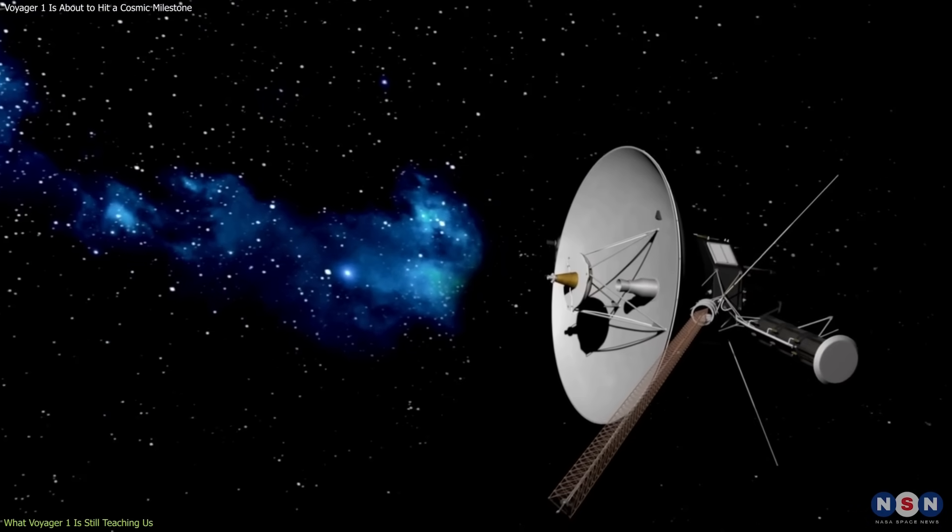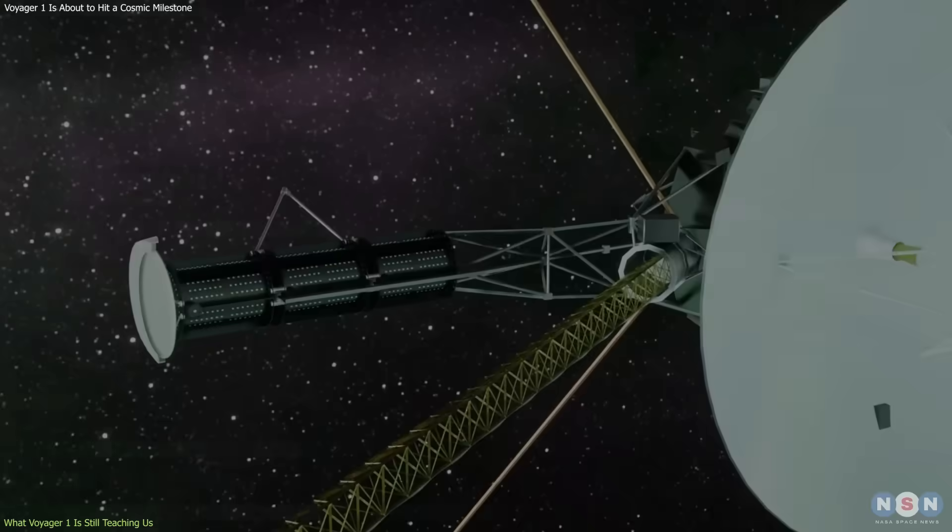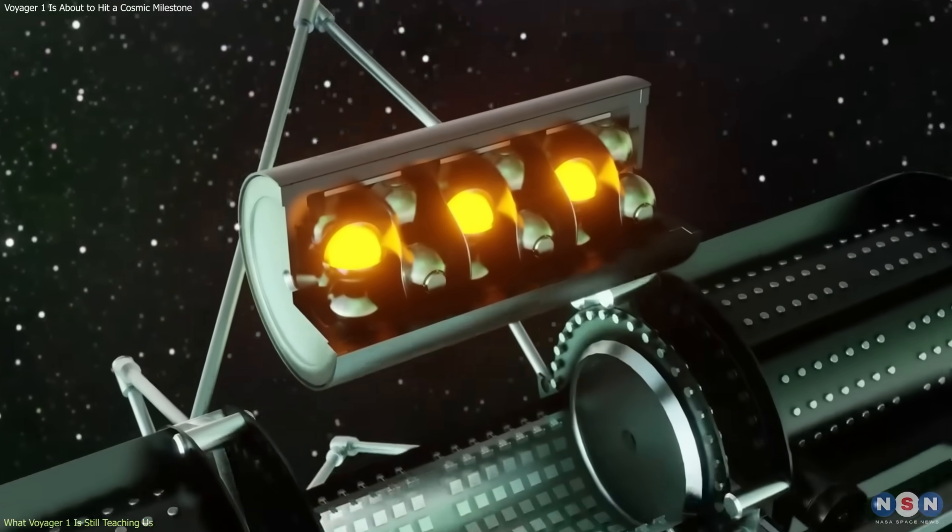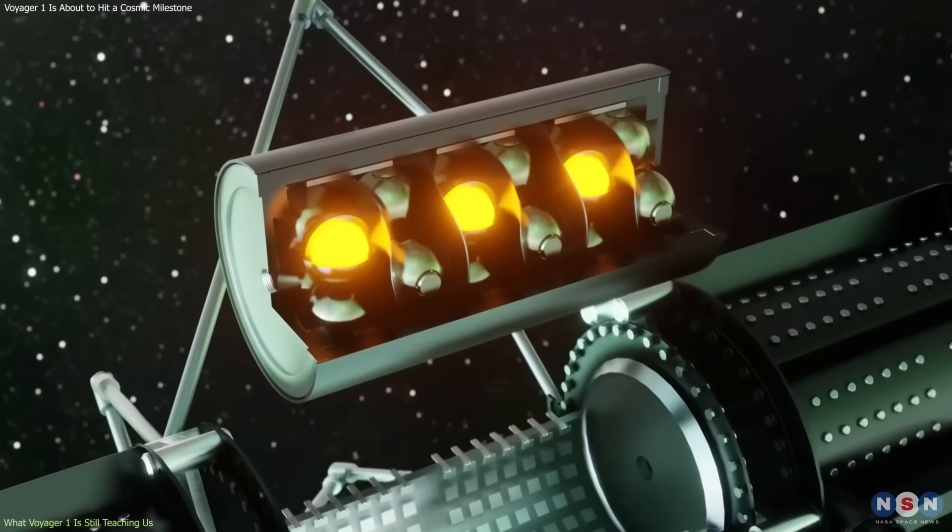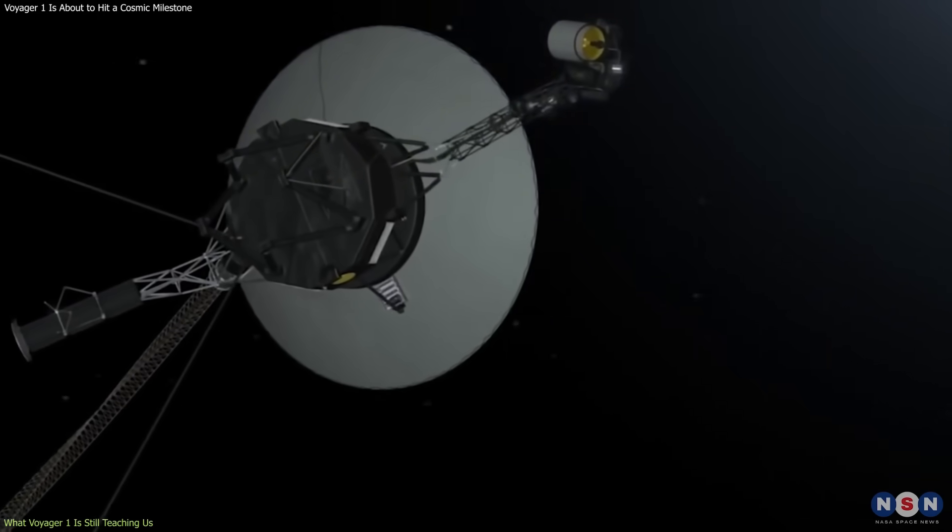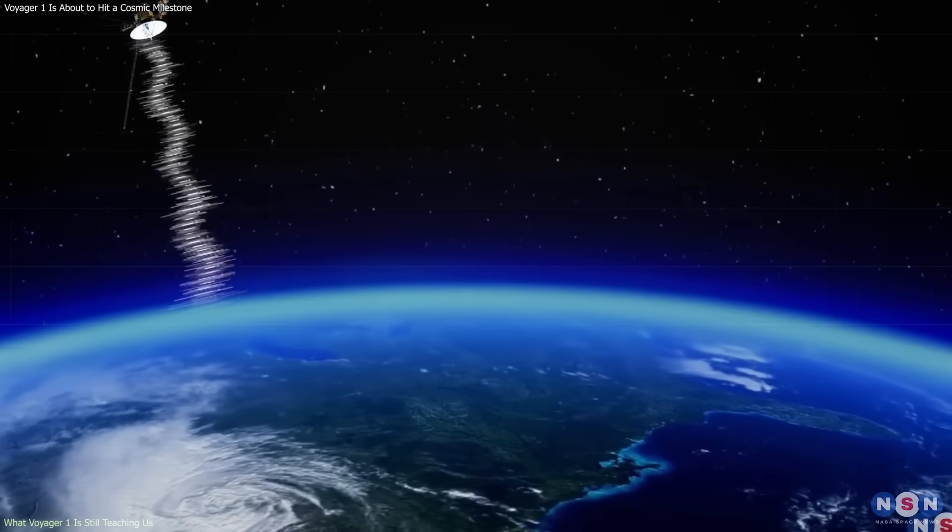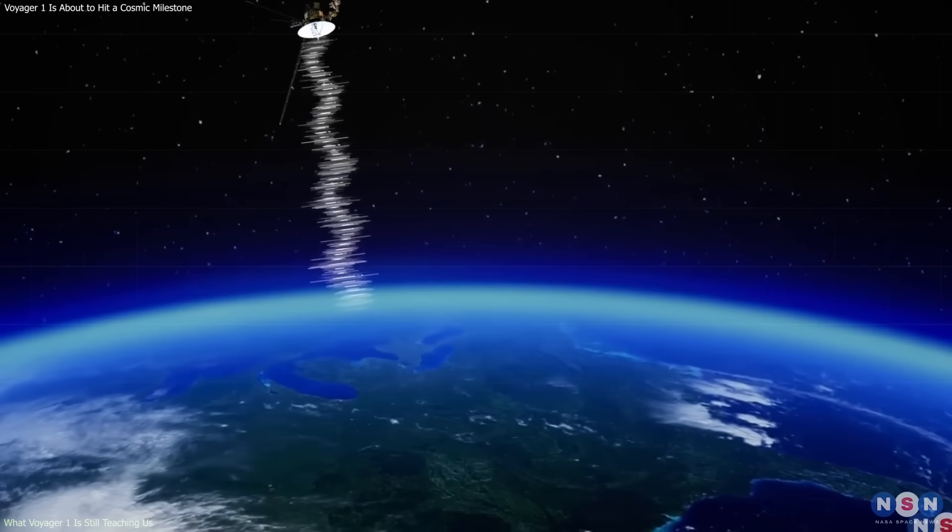The probe's greatest constraint is power. It relies on a radioisotope thermoelectric generator, RTG, which converts the heat of decaying plutonium into electricity. Each year, output drops by about 4 watts, forcing NASA to shut down non-essential systems. Eventually, even the communication transmitter will no longer function.